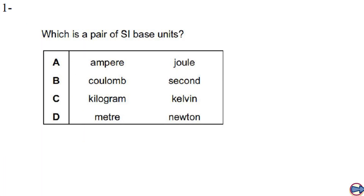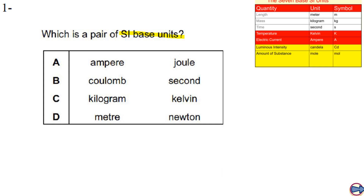Here is our first question, which is simply asking us about SI base units — not quantities. Often students get confused with units and quantities. There are seven SI base units and seven SI quantities. In this column we have SI quantities.